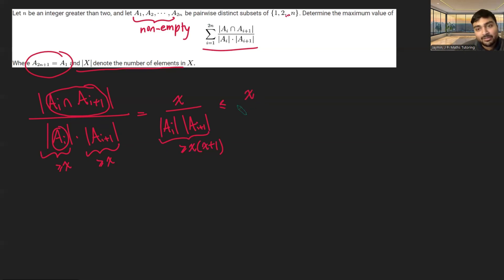So the upper bound value of this is x over x plus 1. X over x times x plus 1, sorry. Okay, cool.